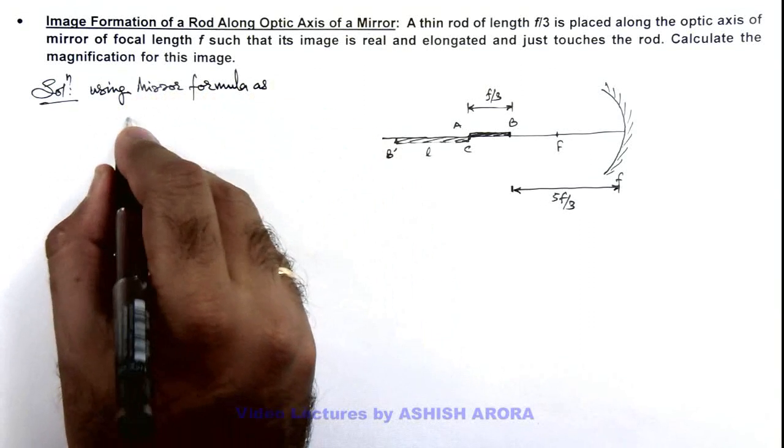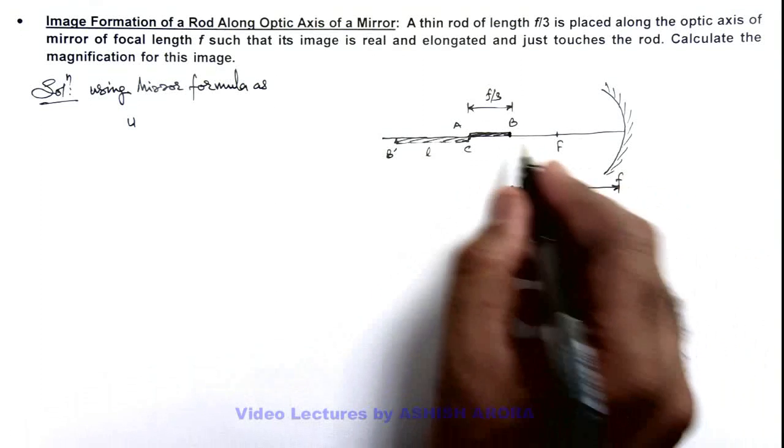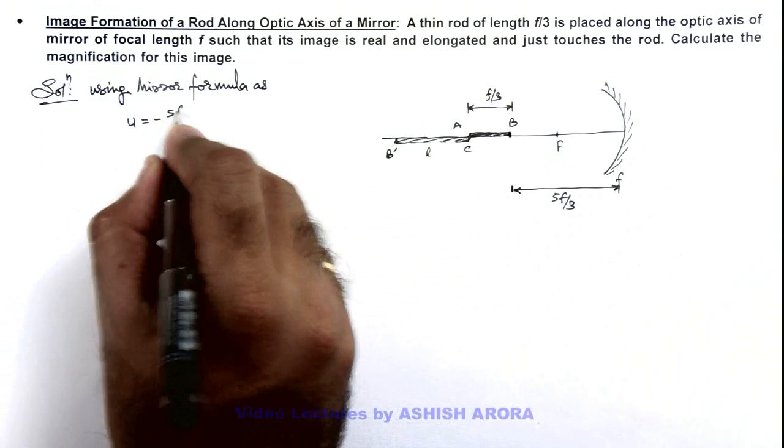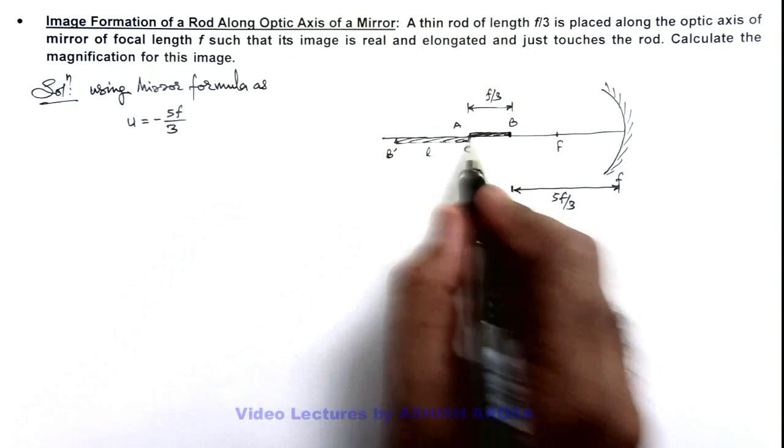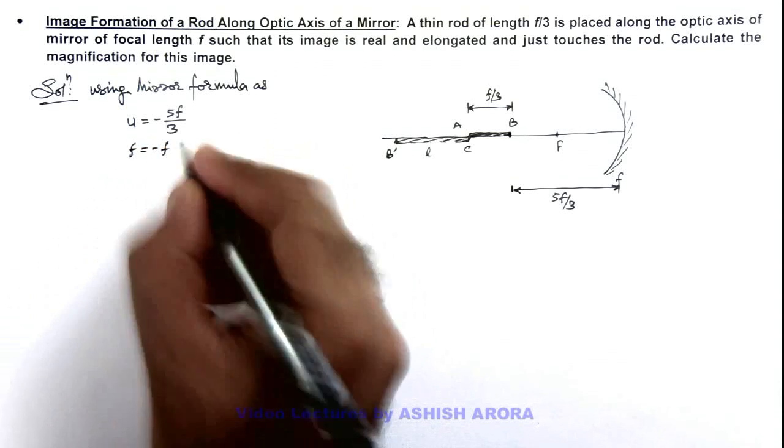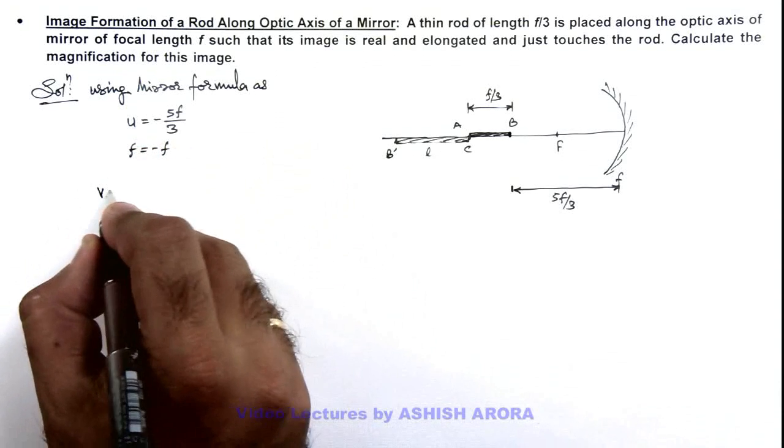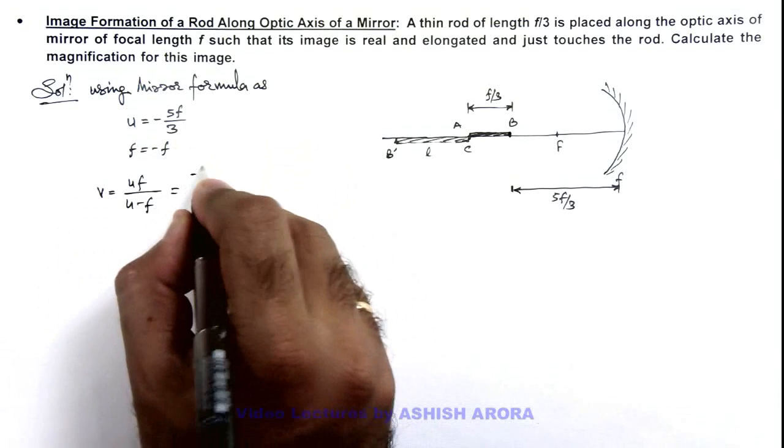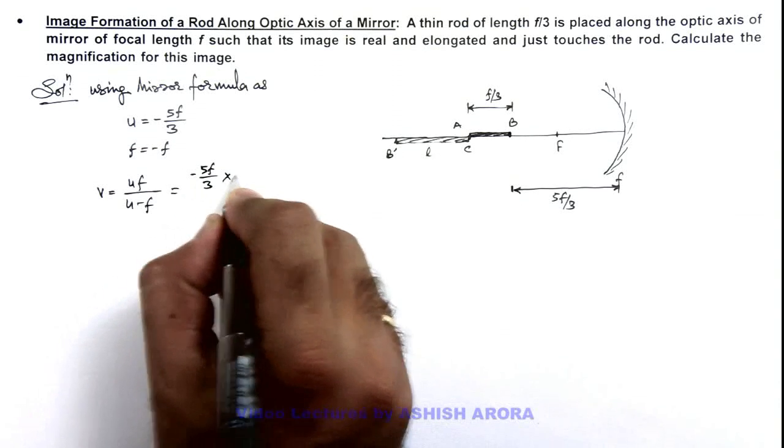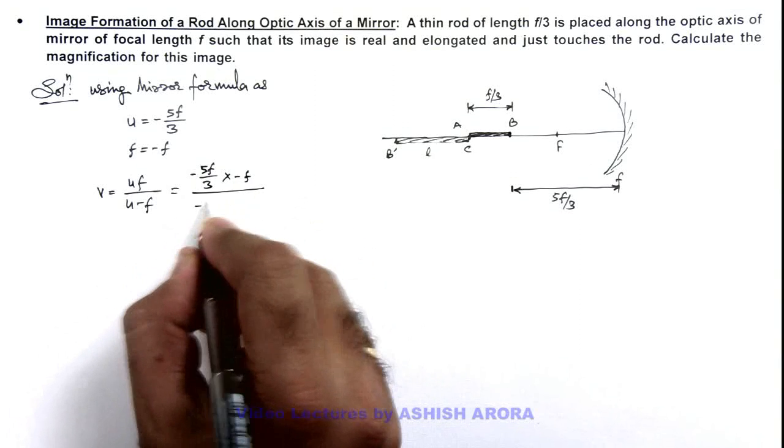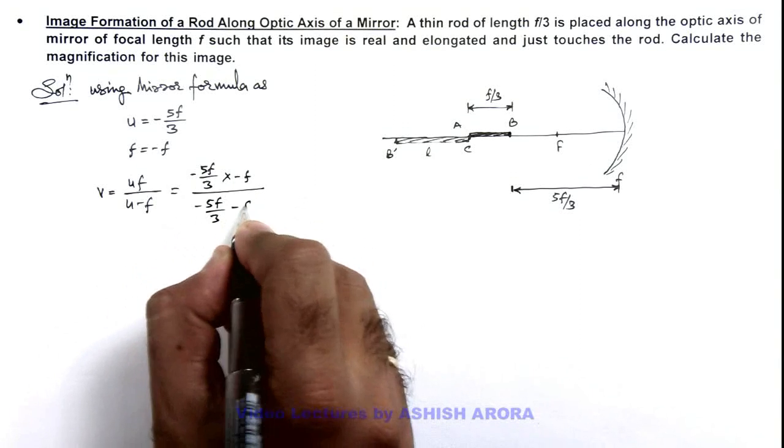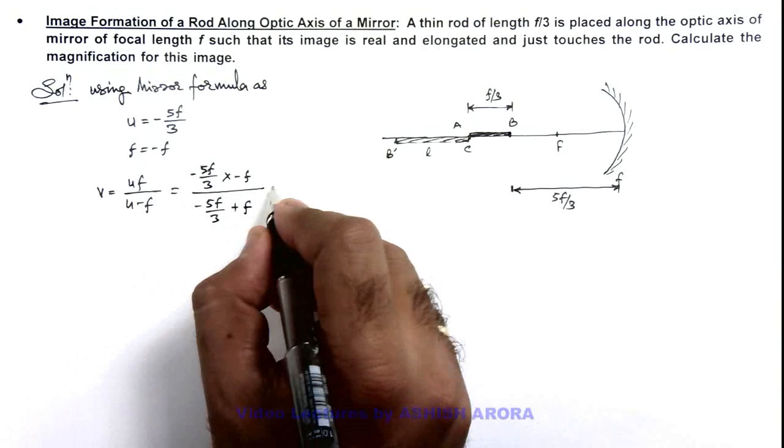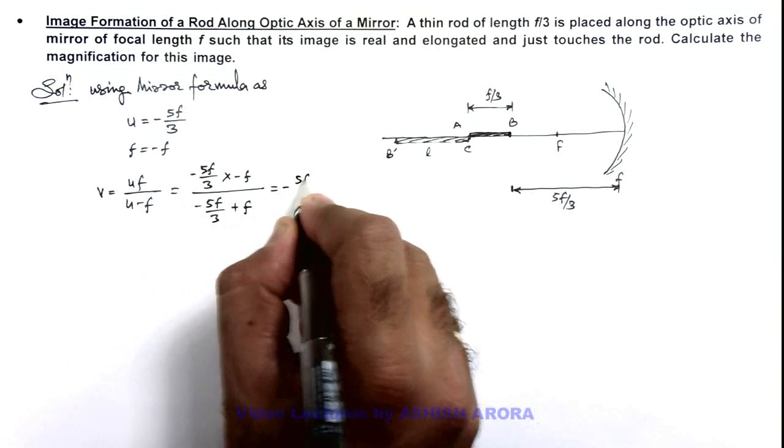As in this situation we take the object, the point B, is located at a distance 5f by 3 so we take it as minus 5f by 3. And the focal length of mirror we can take as minus f. Using mirror formula we can write v as uf by u minus f. So on substituting the values it is minus 5f by 3 multiplied by minus f divided by minus 5f by 3 minus f. On simplifying we are getting the result as minus 5f by 2.